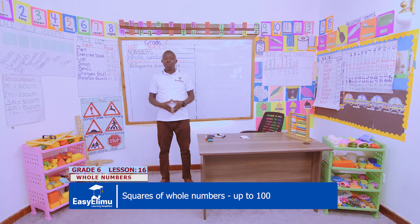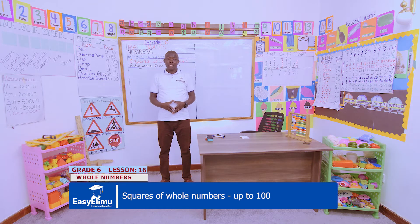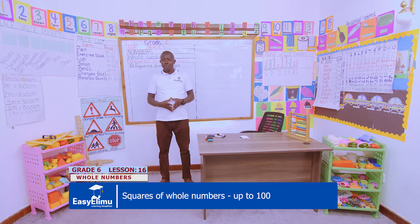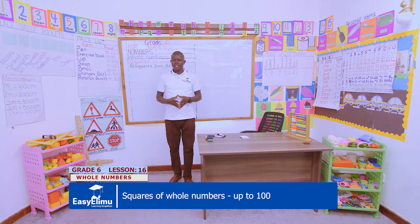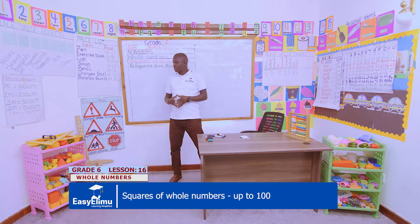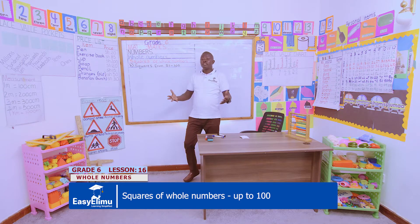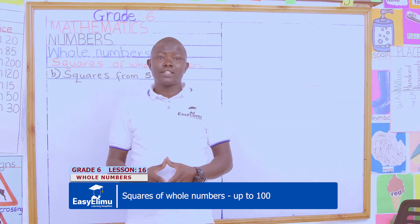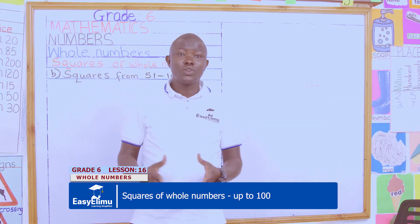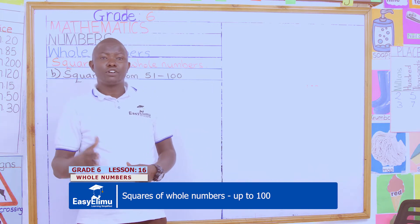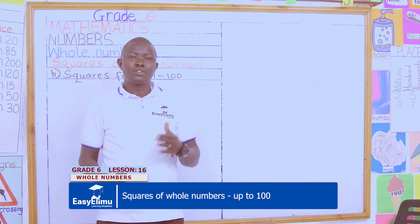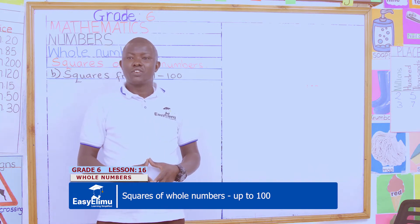In our lesson for today, mathematics for grade 6, we'll be working out squares of whole numbers up to 100, specifically from 51 up to 100. In our previous lesson, you learned the squares from 1 to 50, and today we'll continue up to 100.